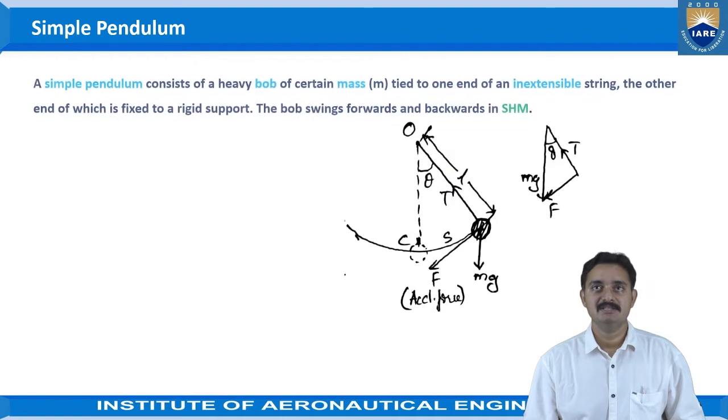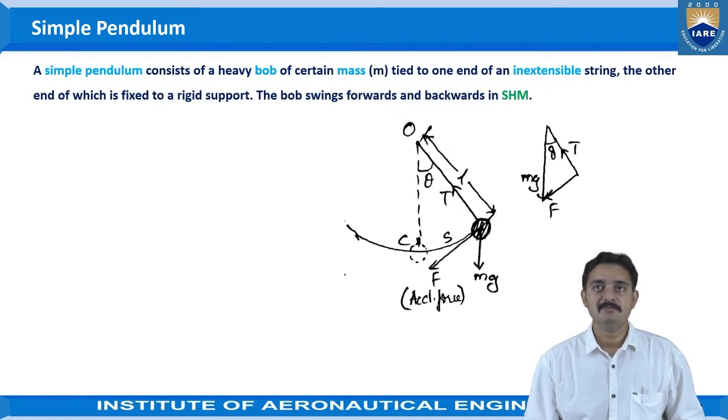First, let us see what is the simple pendulum. A simple pendulum consists of a heavy bob of certain mass m tied to one end of an inextensible string, the other end of which is fixed to a rigid support. The bob swings forward and backwards in simple harmonic motion.